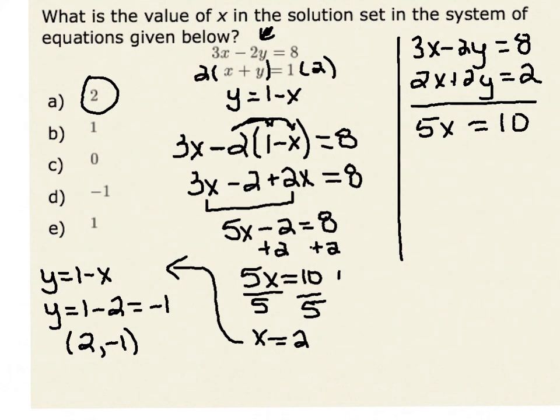Notice this gets me to the same place as substitution. Therefore, when I divide by 5 on both sides of my equation, I get x is equal to 2.